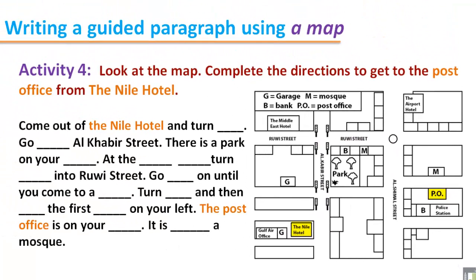In the first line, it says: come out of the Nile Hotel and turn — we have to decide the direction. The Nile Hotel is here, and the map shows we have to go to the left. So we write: come out of the Nile Hotel and turn left.